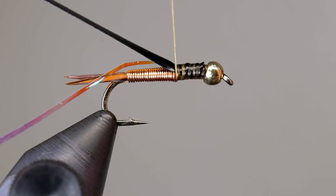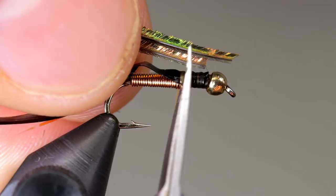Next, grab a couple of pieces of peacock hurl, cut the tips so they are aligned, and tie them in with the ends also butted up against the bead. This time, leave your thread behind the bead.